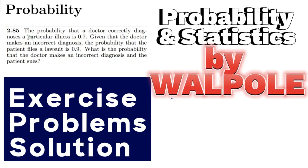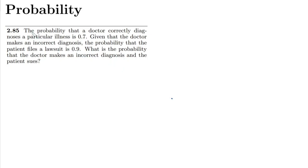Welcome back guys, this is question 2.85. The statement is: the probability that a doctor correctly diagnoses a particular illness is 0.7.